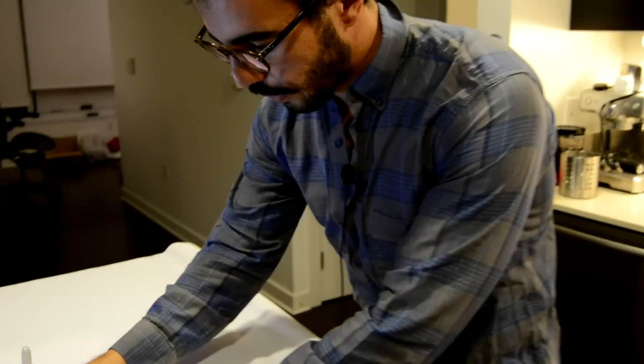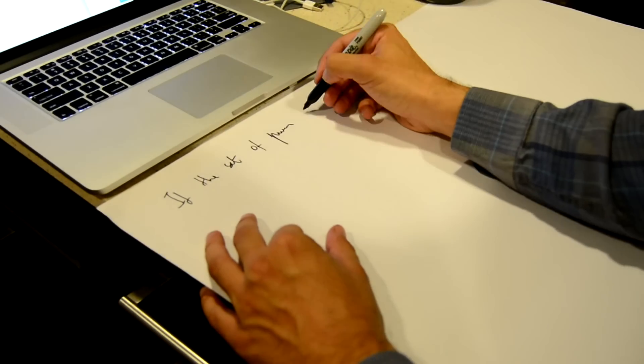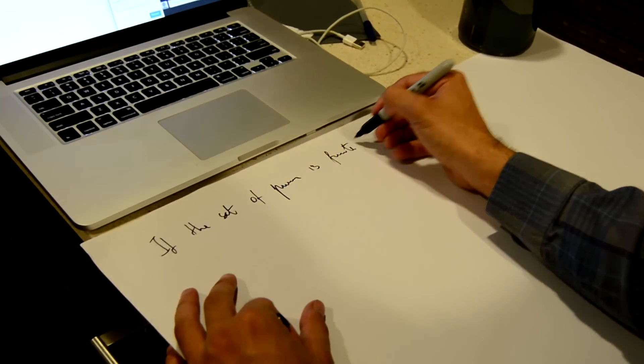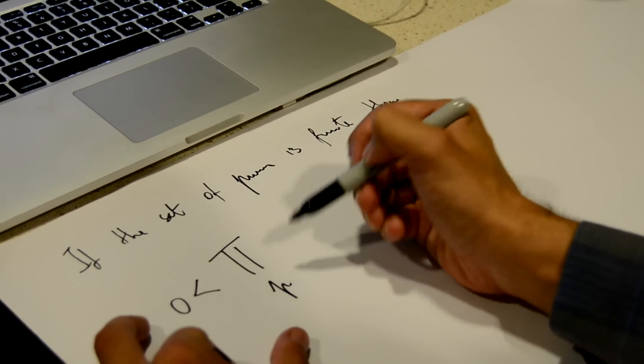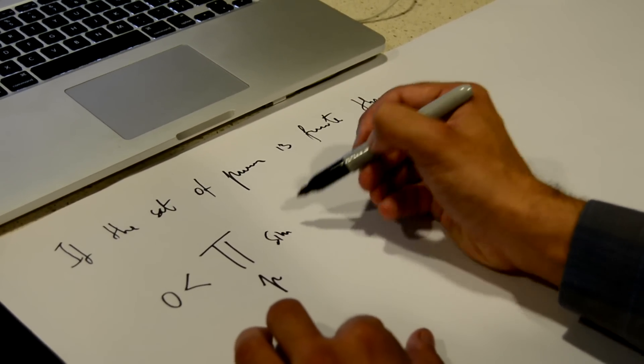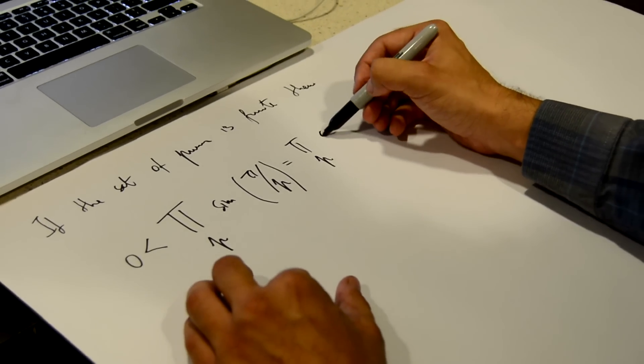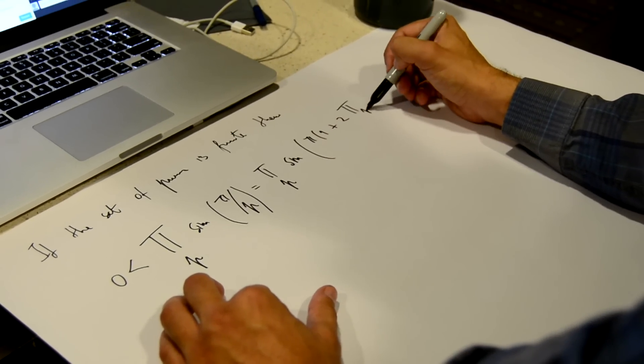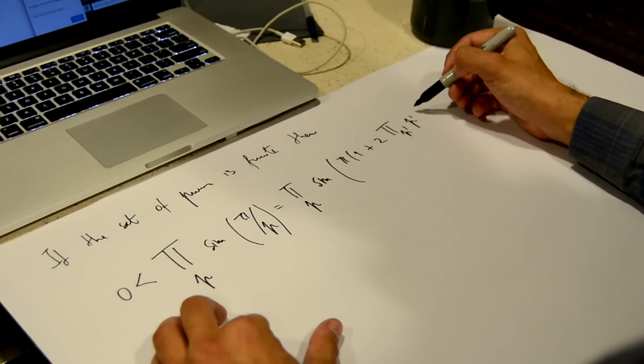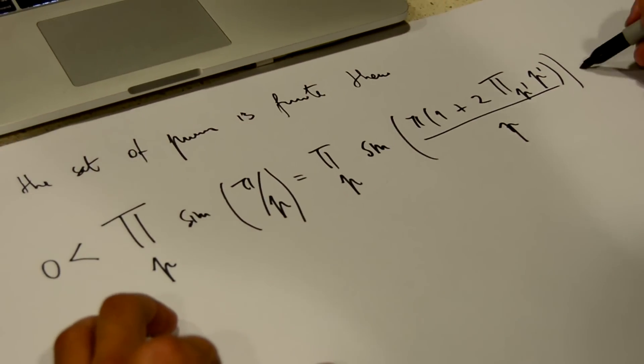So the proof is something like this. If the set of primes is finite, then we have a quantity that is greater than zero, that is the product over all the prime numbers of sin(π/p), that is equal to the product over all prime numbers of sin(π(1 + 2∏p/p)). And this is equal to zero.